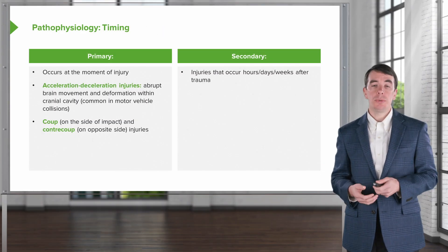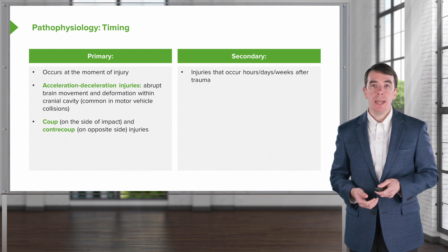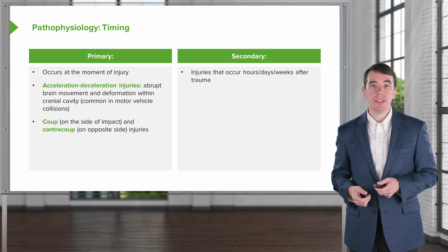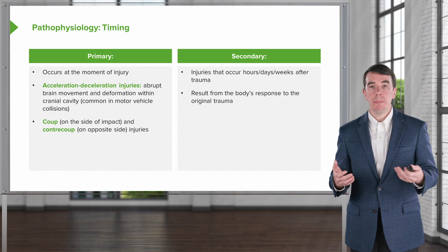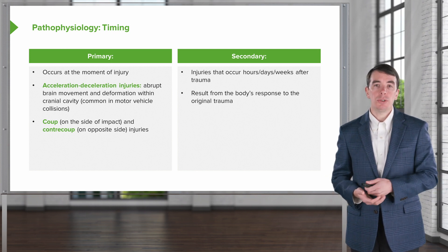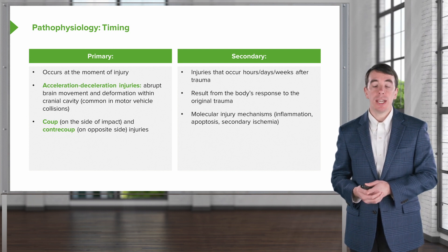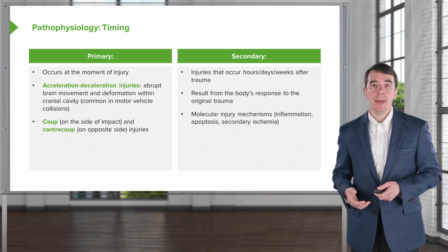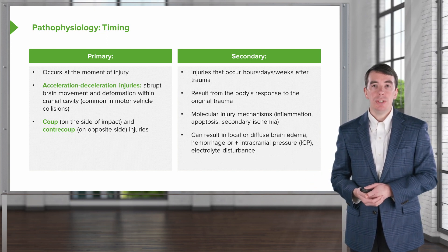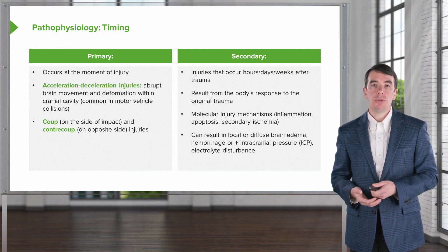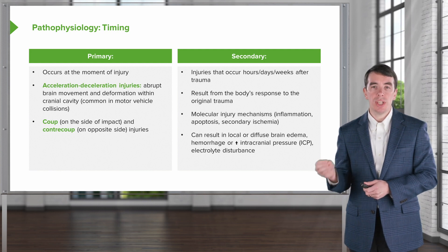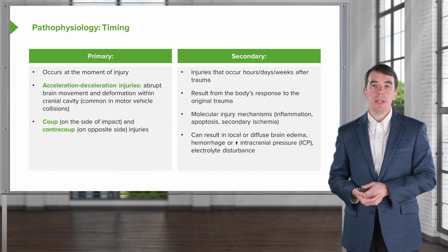We can also see secondary injuries that develop after the initial traumatic event. These are injuries that occur hours, days, or sometimes weeks after the initial trauma, resulting from the body's response: inflammation, changes in biochemistry, or electrolyte disturbances. Molecular injury mechanisms include inflammation, apoptosis or cell death, and secondary ischemia or reduced perfusion. This can result in local or diffuse brain edema, either as a result of hemorrhage or increase in intracranial pressure, and we really worry about these secondary injuries in patients who have suffered an initial traumatic brain injury.